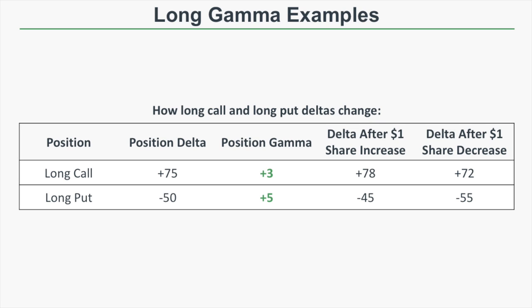As the stock price rises, the delta gets more positive, and as the stock price decreases, the position's delta decreases. Now let's look at the long put. Say the initial position delta is negative 50 and the position gamma is positive 5. If the stock price rises by one dollar, the position delta increases by five. Since the initial delta is negative, adding to a negative number brings it closer to zero — so the put delta goes from negative 50 to negative 45.